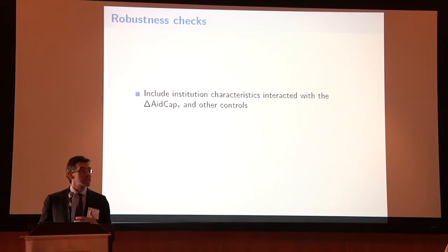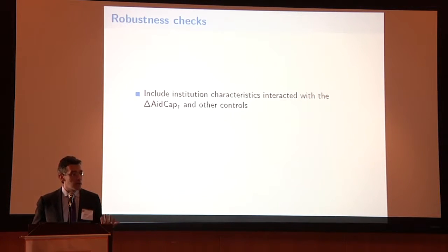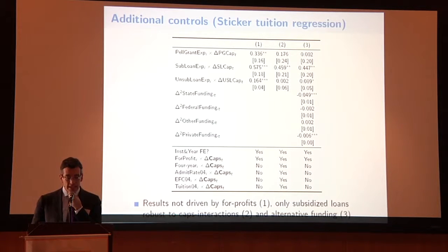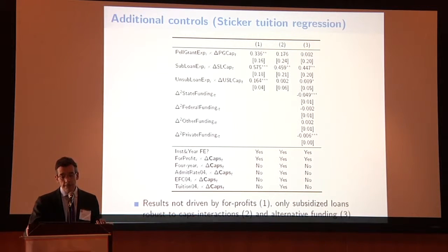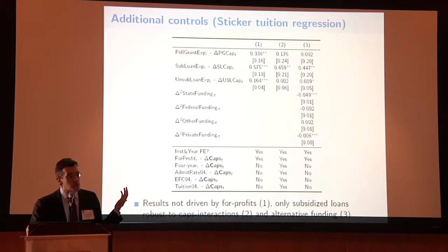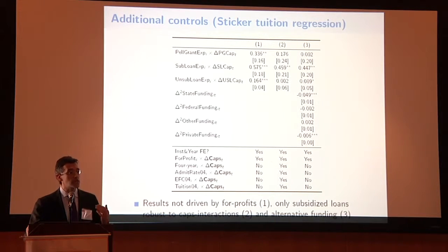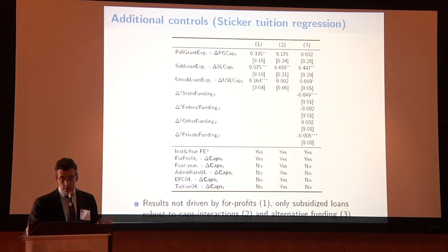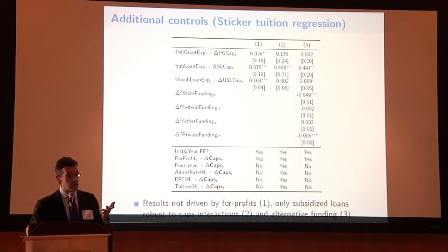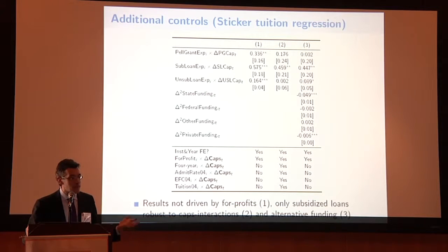For robustness checks, the first thing to worry about is whether results are driven purely by for-profit universities, given the earnings call quote we saw. We interact being a for-profit with actual changes in caps — the results are not much different, though partly because we don't have many for-profits in our sample. The second column is a harder test: the fraction of students at the caps is a function of cost of attendance and expected family contribution, so we worry certain universities may be behaving differently in those years. When we add those controls, only the subsidized loan effect survives and is significant.